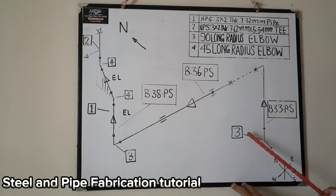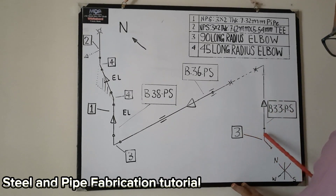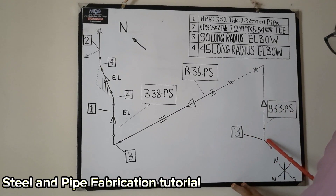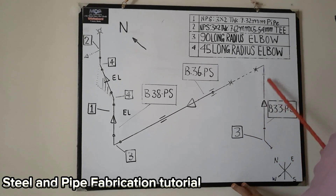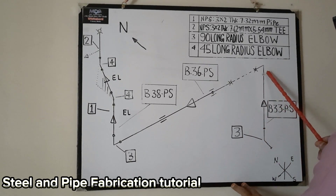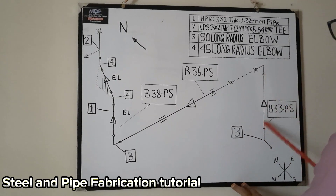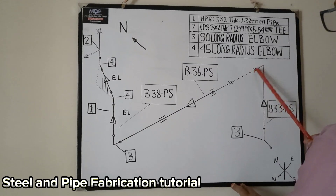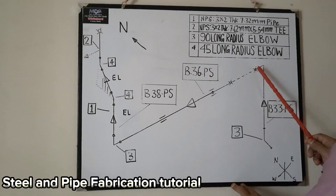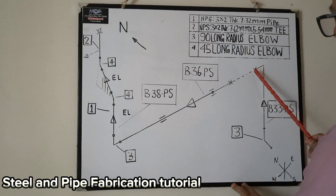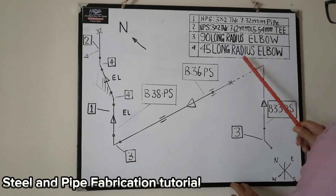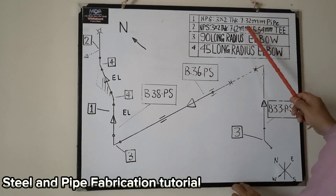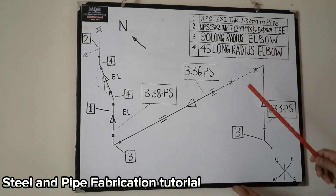We follow: number three is here, 90 degree elbow, and then here again 90 degree elbow, and here to here one pipe. Then here have one flange or anything. If you have a number, you check the table.